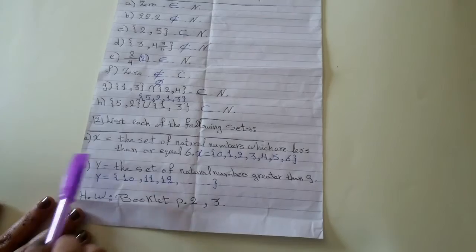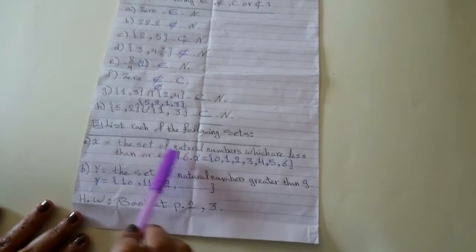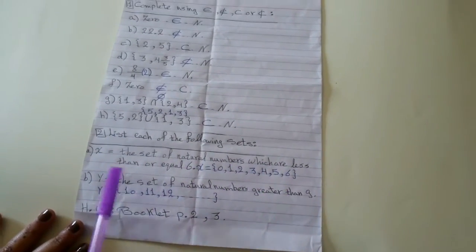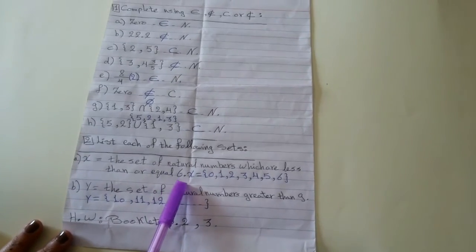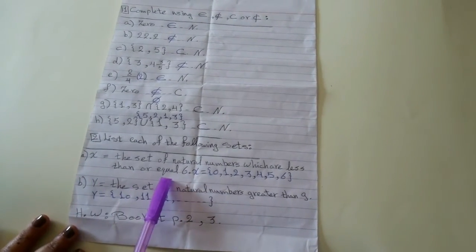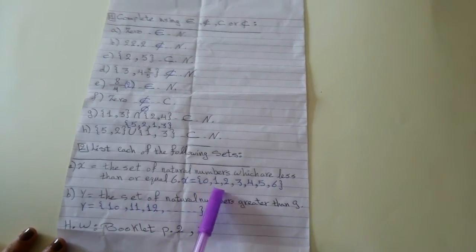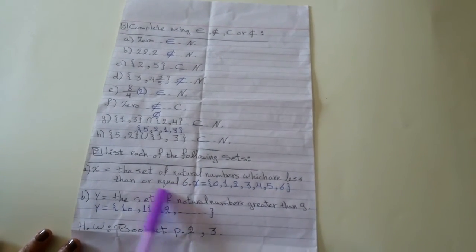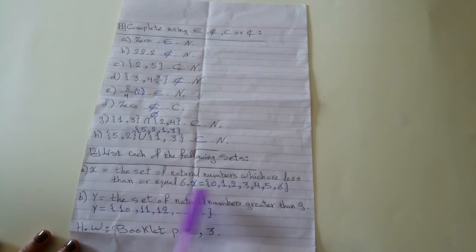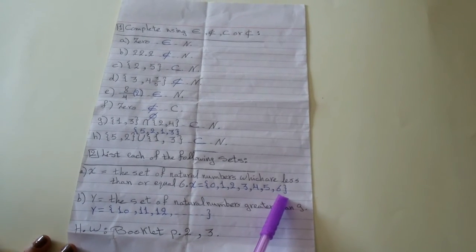X equals the set of natural numbers which are less than or equal 6. All the natural numbers less than 0, 1, 2, 3, 4, 5. But I have the word equal. So, I have to write 6 with them.